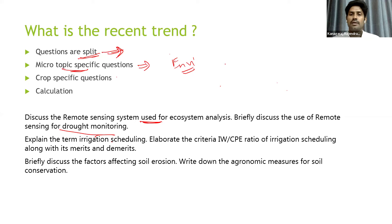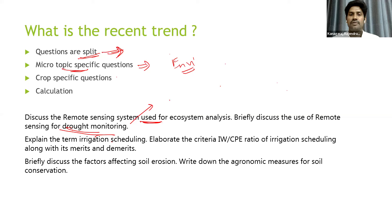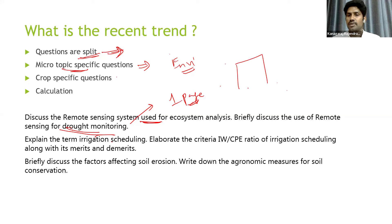When answering a general question, we can prepare a three-page answer by studying two or three points under each application. But for a micro-topic question, to fill a two-page answer only for drought monitoring, you need to write a full page on that one topic alone. So while preparing any topic, we need to prepare the topic as a whole, and at the same time prepare proper content for every separate application — at least half a page to one page of content for each application in detail.